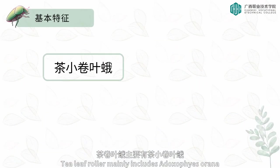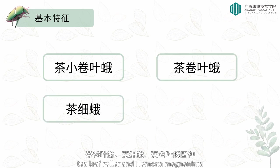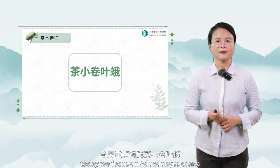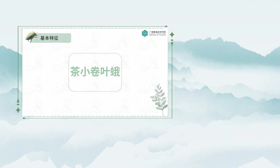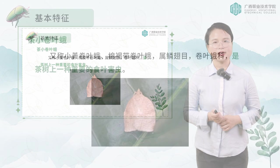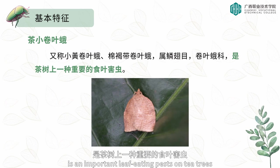Tea leaf rollers mainly include Adoxiphes orana, Homona coferia, tea leaf roller, and Homona magnanima. Today we focus on Adoxiphes orana, also known as Small Yellow Leaf Rolled Moth, or Cotton Brown Leaf Roll Moth. It belongs to the Lepidoptera leaf hopper family and is an important leaf-eating pest on tea trees.